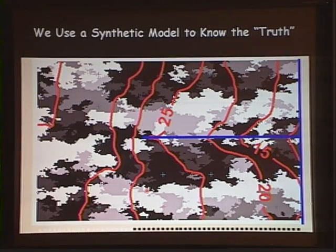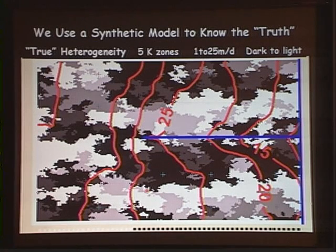To talk about that, I've brought a synthetic model because in that case we will know the truth. This synthetic model has true heterogeneity including five hydraulic connectivity zones ranging from 1 to 25 meters per day. The darker is low conductivity, lighter is high. This system is really not very heterogeneous compared to most field sites, but you'll see how much different our predictions can come out when we try to model this system.